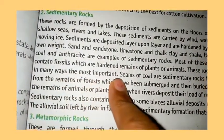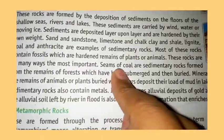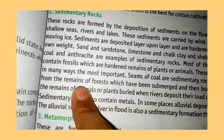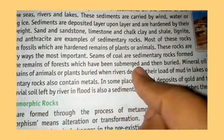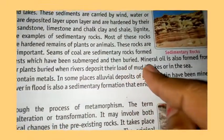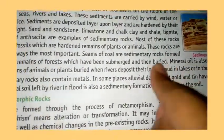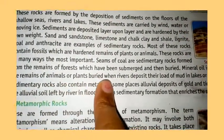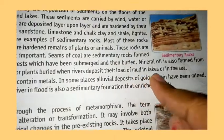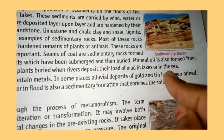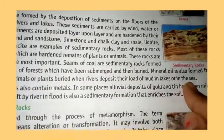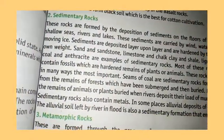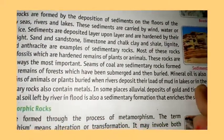These rocks are in many ways the most important. Seams of coal are formed from the remains of forests which have been submerged. Mineral oil is also formed from the remains of animals and plants buried in river deposits and under loads of mud in the sea.